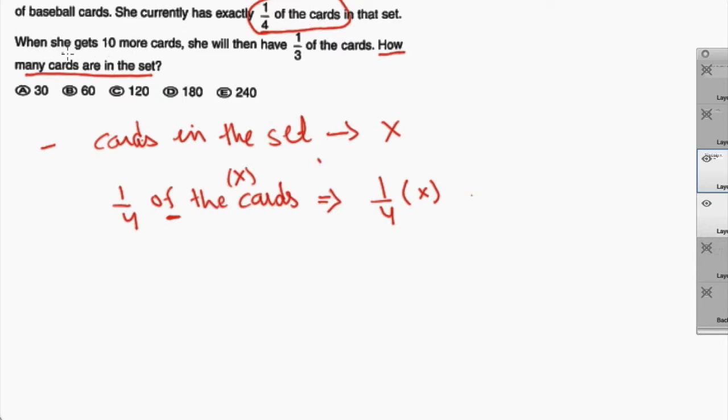Moving on, when she gets 10 more cards she will then have one-third of the cards. Again you have this one-third of the cards which would be just one-third times X. So now this information - one-fourth of the cards, ten cards, one-third of the cards - all this has to come together in an equation.